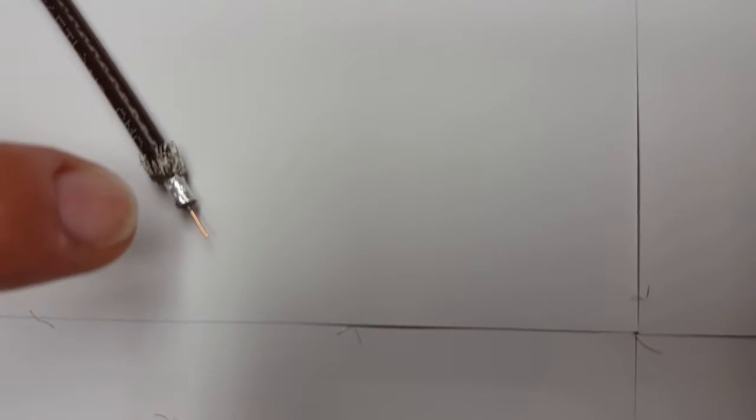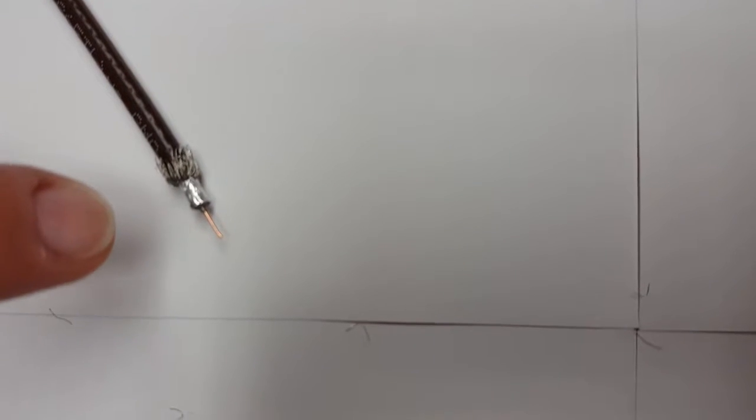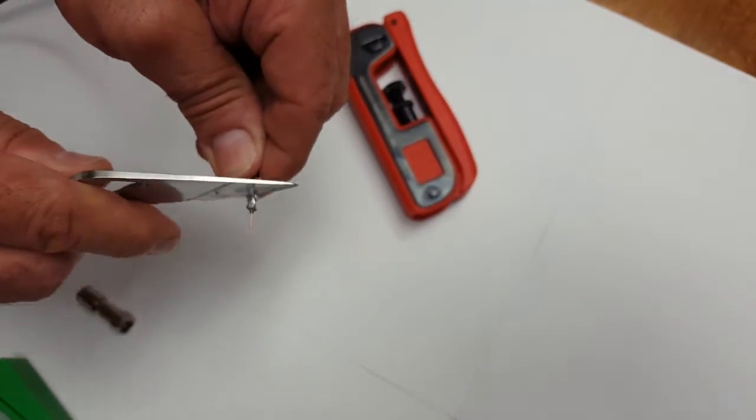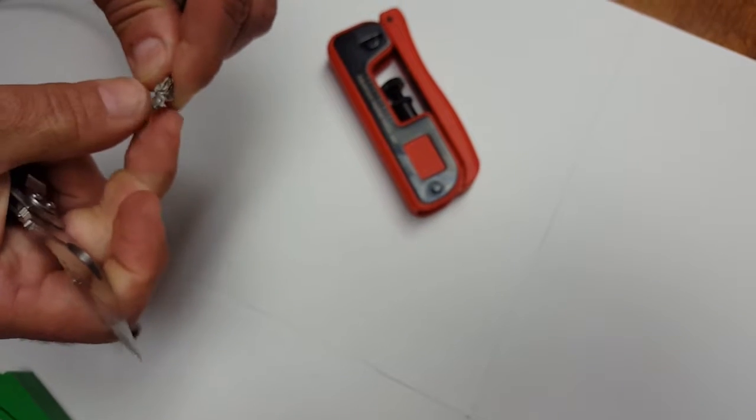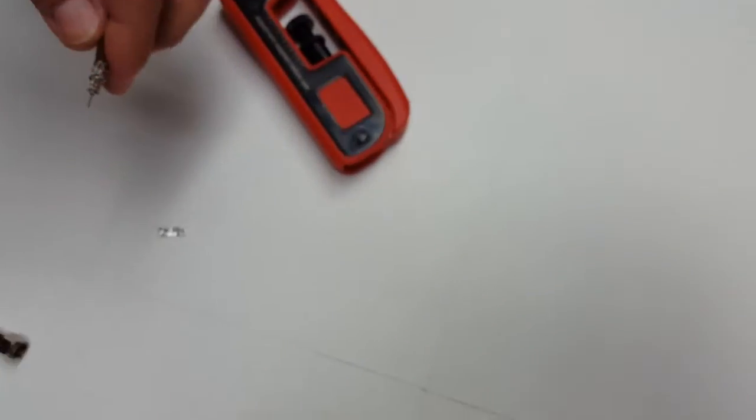So that foil that you see right there has to come off. So your outer braid is brushed back, but that middle foil has to come off. So you need to take a blade of any sort and just score it. And literally just peel that foil right off. So you don't need that anymore.